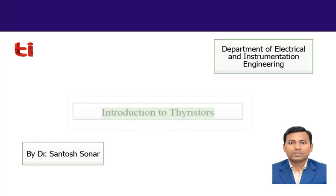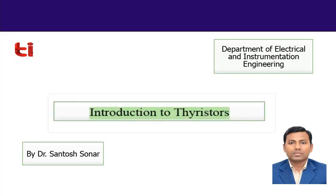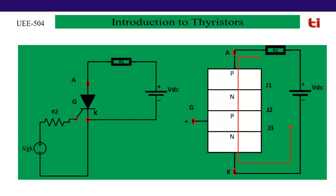Last class we have seen how thyristor can be triggered by applying a positive gate current to break junction J2. The left hand and right hand circuits are equivalent to each other. In the left hand circuit, the top circuit diagram consisting of VDC, R1, and thyristor is known as the power circuit of the SCR. And the bottom one consisting of VGK (gate to cathode voltage), R2, and gate to cathode terminal is known as the driver circuit or triggering circuit of SCR.